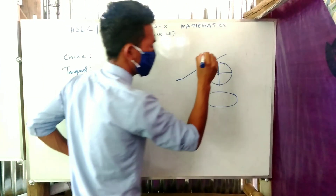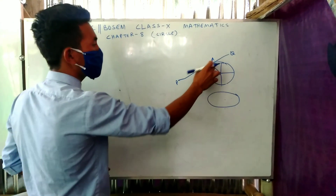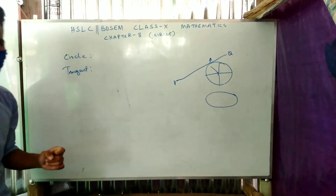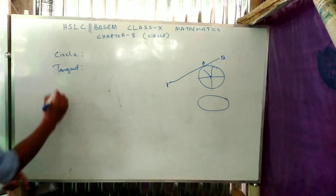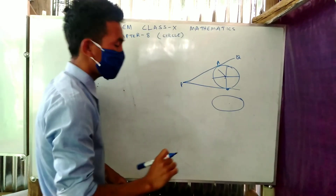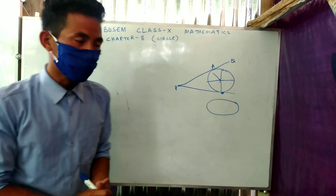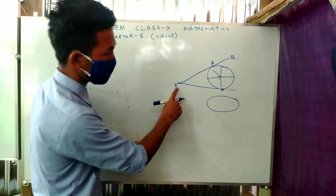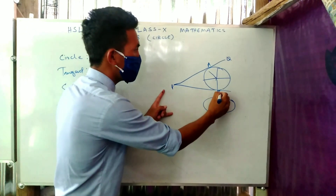The BQ line is a point of contact — a tangent line. How many tangents can be drawn from an external point to a circle? The BQ line is a tangent, and the CQ line can also be drawn from the external point.